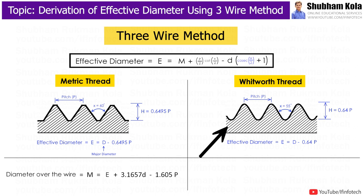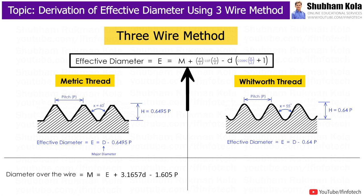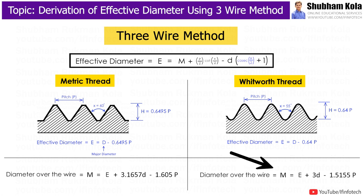The standard nomenclature for Whitworth thread is: thread angle x = 55 degrees, depth of thread H = 0.64P, and effective diameter E equals major diameter D minus 0.64 × pitch. Substituting all these values and simplifying, we get the equation for capital M, that is the diameter over the wire.